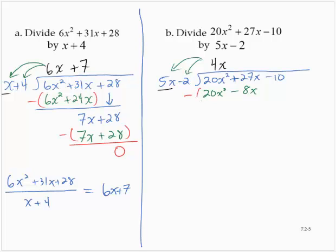Subtracting that whole quantity: 20x squared minus 20x squared is 0. Now 27x minus negative 8x — here's where we tend to make errors. That's 27 plus 8, which is 35x. Bring down the minus 10. For the next division step: 35x divided by 5x is plus 7.